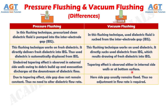Difference number 4: in pressure flushing technique, due to the tapering effect, the side gap does not remain constant, thus no need to alter the dielectric flow rate. Whereas in vacuum flushing technique, the side gap usually remains fixed, thus no adjustment in flow rate is required.